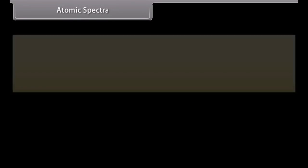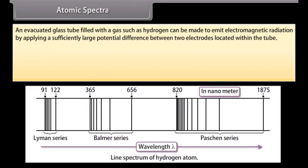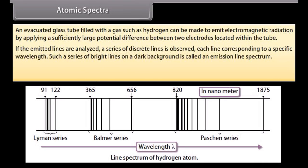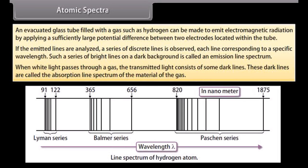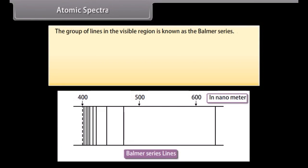Atomic spectra. An evacuated glass tube filled with a gas such as hydrogen can be made to emit electromagnetic radiation by applying a sufficiently large potential difference between two electrodes located within the tube. If the emitted light is analyzed, a series of discrete lines are observed, each line corresponding to a specific wavelength. Such a series of bright lines on a dark background is called an emission line spectrum. When white light passes through a gas, the transmitted light consists of some dark lines. These dark lines are called the absorption line spectrum of the material of the gas. The group of lines in the visible region is known as the Balmer series.